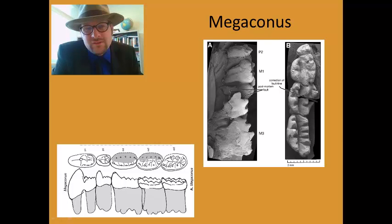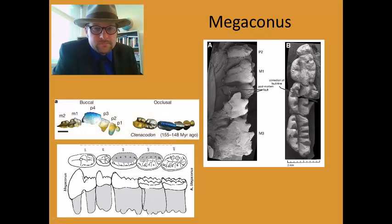This is very multituberculate-like, and in fact, if we compare it to multituberculates from the Jurassic, it looks extremely similar to those types of groups. This is Sanconiodon, which is from the Jurassic, a little bit younger.